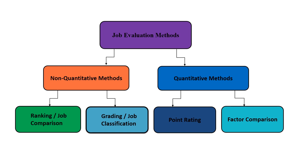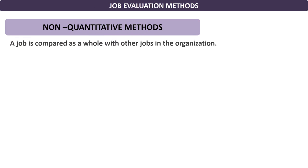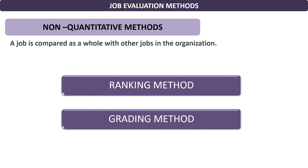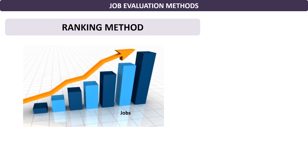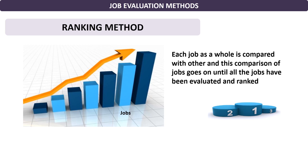Looking at the methods of job evaluation, there are basically two types: non-quantitative and quantitative. Under non-quantitative methods, a job is compared as a whole with other jobs in the organization. One of the non-quantitative methods is the ranking method, which is the simplest form of job evaluation. In this method, each job as a whole is compared with others, and this comparison continues until all the jobs have been evaluated and ranked. All jobs are ranked in order of importance from the simplest to the hardest or from the highest to the lowest.